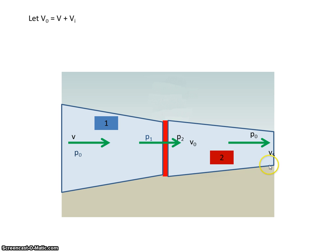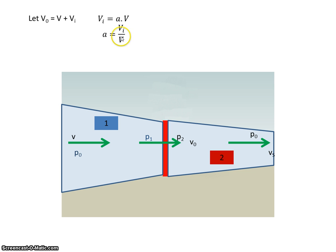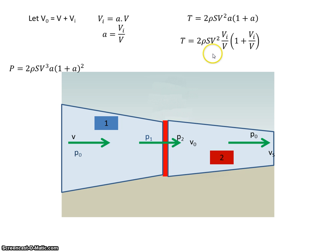We started by saying that the velocity through here was V plus the induced velocity, and that the induced velocity was equal to A — the inflow factor A — times the freestream velocity. Therefore, I can say that A, the inflow factor, is equal to VI over V — the induced velocity over the freestream velocity. So substituting VI over V for A in the thrust expression.